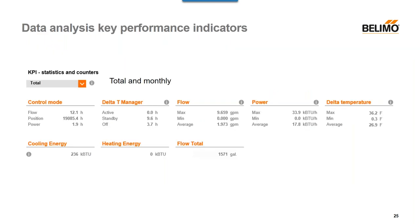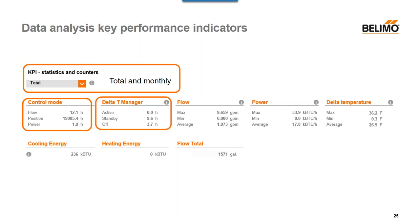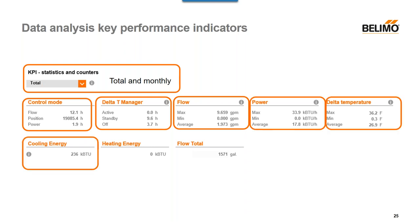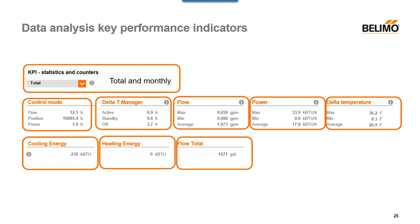There are also key performance indicators built directly into it that show, for example, how the valve is operating either total or monthly: what control mode it's in, how often the Delta T manager has been enacted, maximum, minimum, and average flows, same with power and Delta temperature, total cooling energy, total heating energy, and total flow being used. This really allows you to understand from an operational standpoint how the valve is operating.